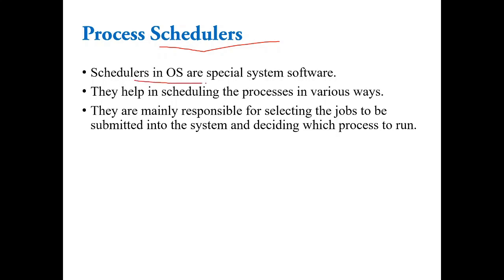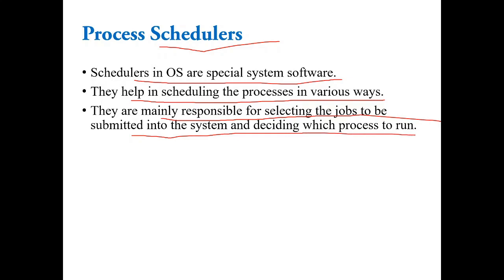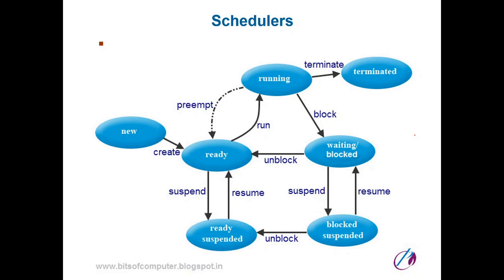Schedulers are special system software that help in scheduling processes in various ways. They are mainly responsible for selecting jobs, that is processes, and submitting them into the system and deciding which process to run. These schedulers work between the various states — some work between new state and ready state, some between ready state and running state, and some between running state and waiting state — selecting processes and moving them from one state to another.